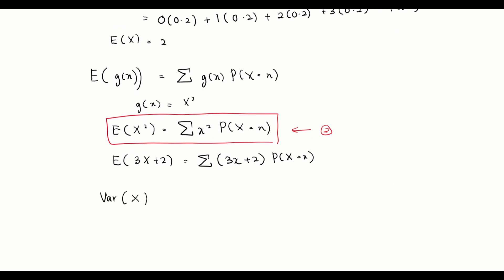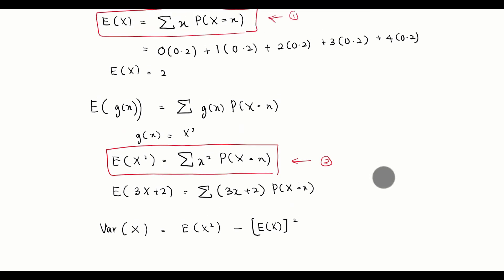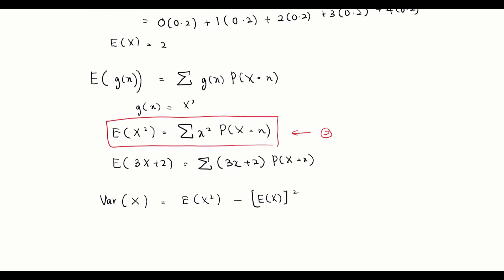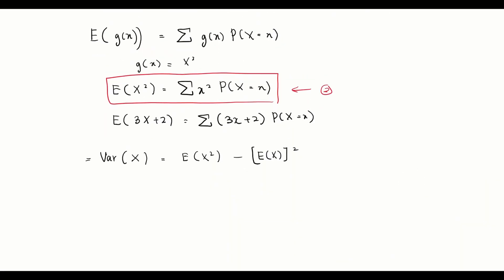The variance of a discrete random variable X has the formula: Var(X) = E(X²) minus [E(X)]². Here, E(X²) is the summation of x² times P(X=x), and E(X) is the expected value of X. Variance is also denoted as sigma squared, similar to chapter 6. We can also find the standard deviation, which is just the square root of the variance.